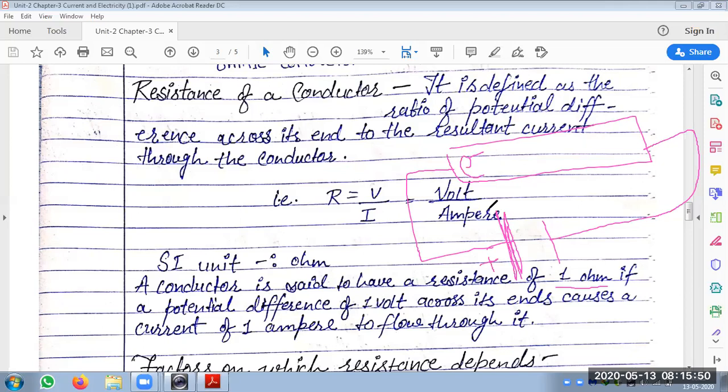So if the potential difference is 1 volt and the current is 1 ampere, then the resistance will be 1 ohm. Simple - 1 volt upon 1 ampere, that is 1 ohm.